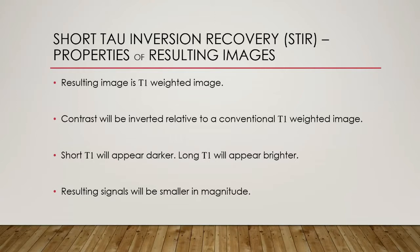So, what are the properties of the resulting image if we use STIR? The resulting image is considered a T1-weighted image. Unfortunately, the contrast will be inverted relative to a conventional T1-weighted image. Tissues with short T1 will appear darker, while tissues with long T1 will appear brighter. Also, the resulting signals will be smaller in magnitude because of relaxation during the Ti period. Generally T1 of fat is much shorter than the T1 of other tissues, but in a case where T1 of fat nearly equals the T1 of a tissue, then that tissue will also be suppressed if STIR is used.